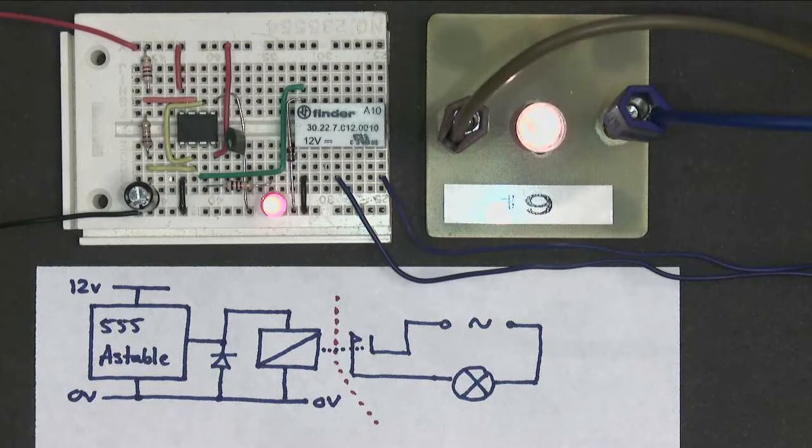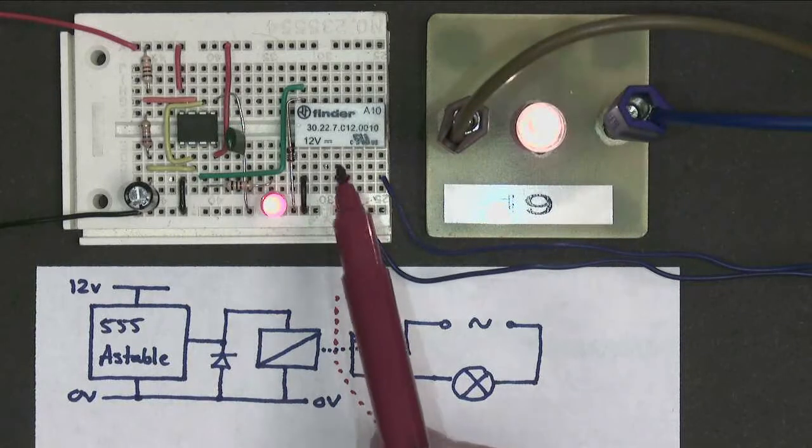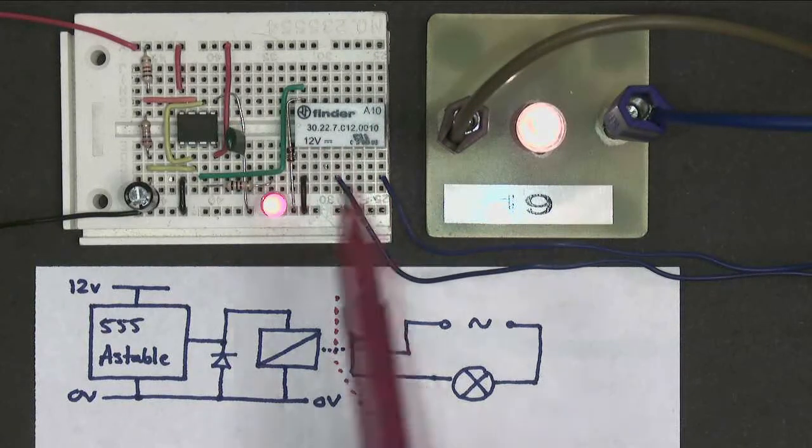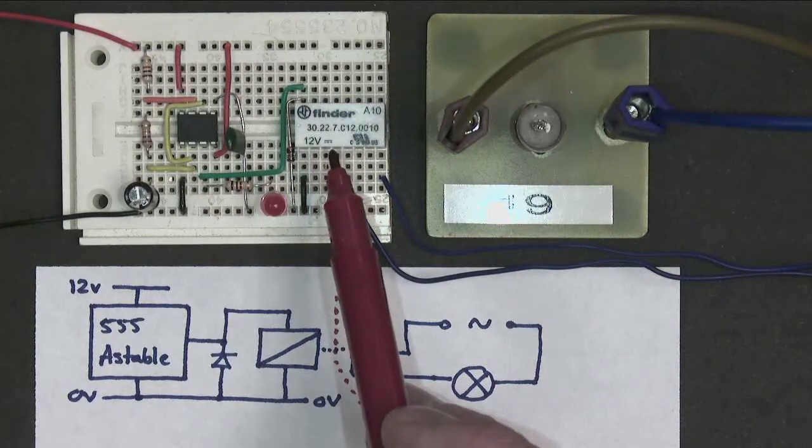This is an example of a circuit, in this case a 555 astable, being used to control a relay, in this case a PCB mounted relay. This green wire here takes the output of the 555 and controls the relay coil.